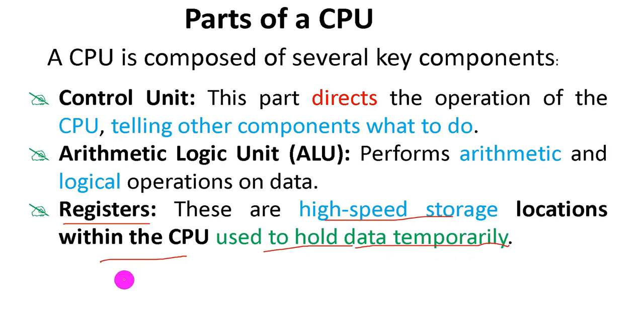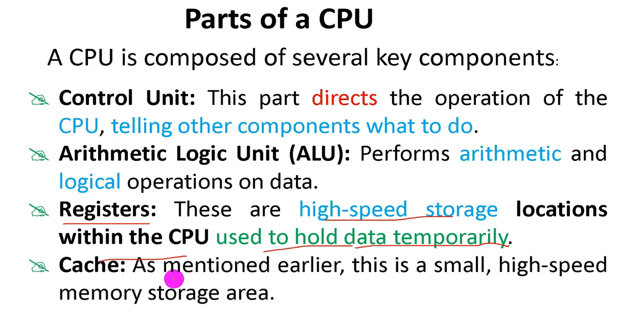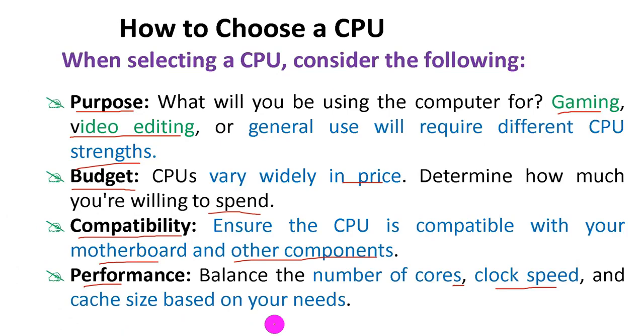The fourth and last part of the CPU is cache. As mentioned earlier in the features of the CPU, this is a small, meaning it can store only a small amount of data, and high-speed memory storage area. It's a part of memory that has high speed because it's a part of the central processing unit and has direct communication with the CPU. Frequently used data by the central processing unit is stored in cache memory. These are the basic concepts of CPU.